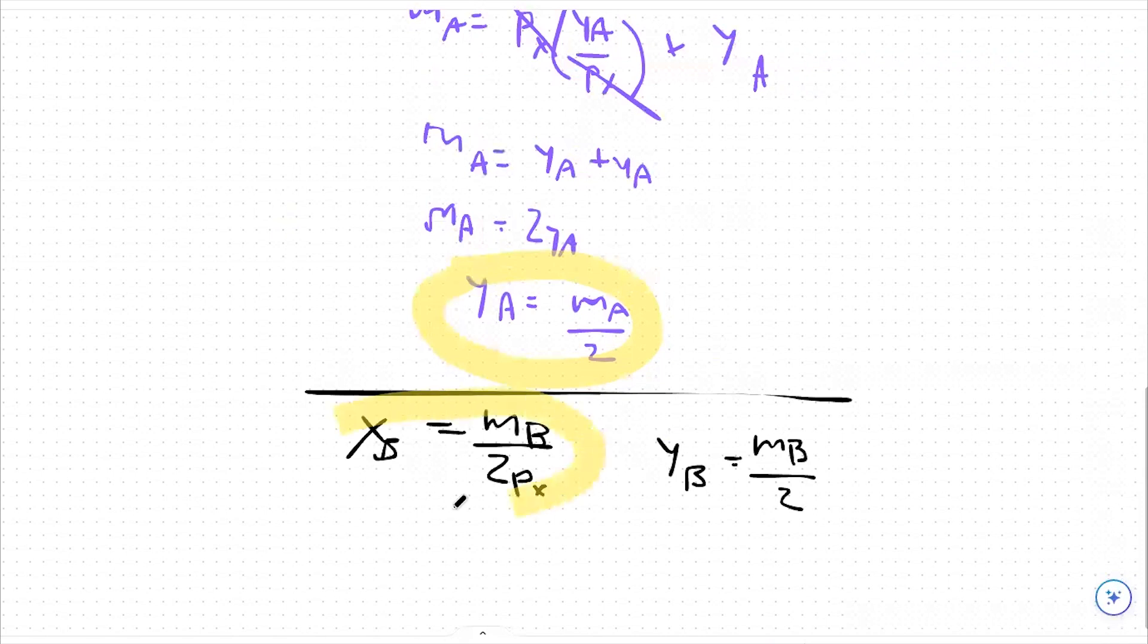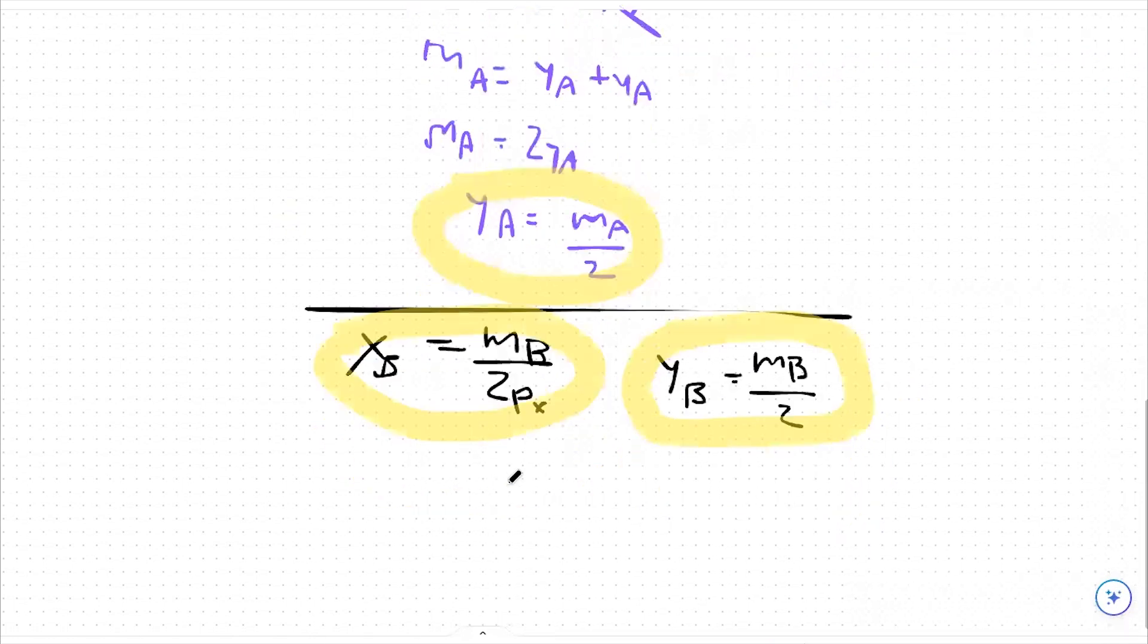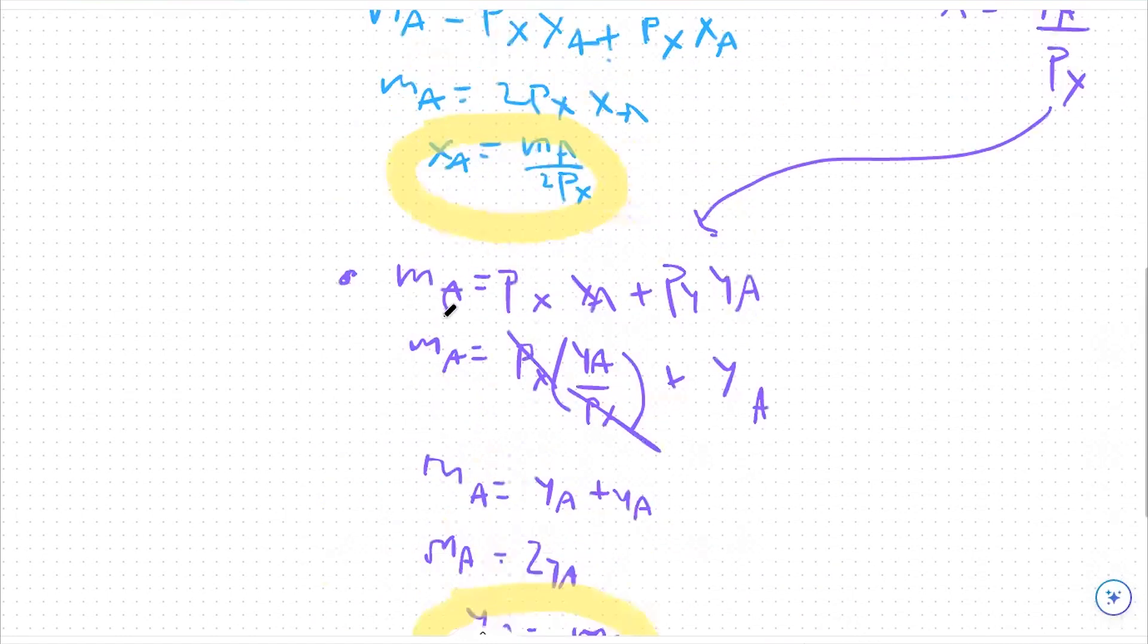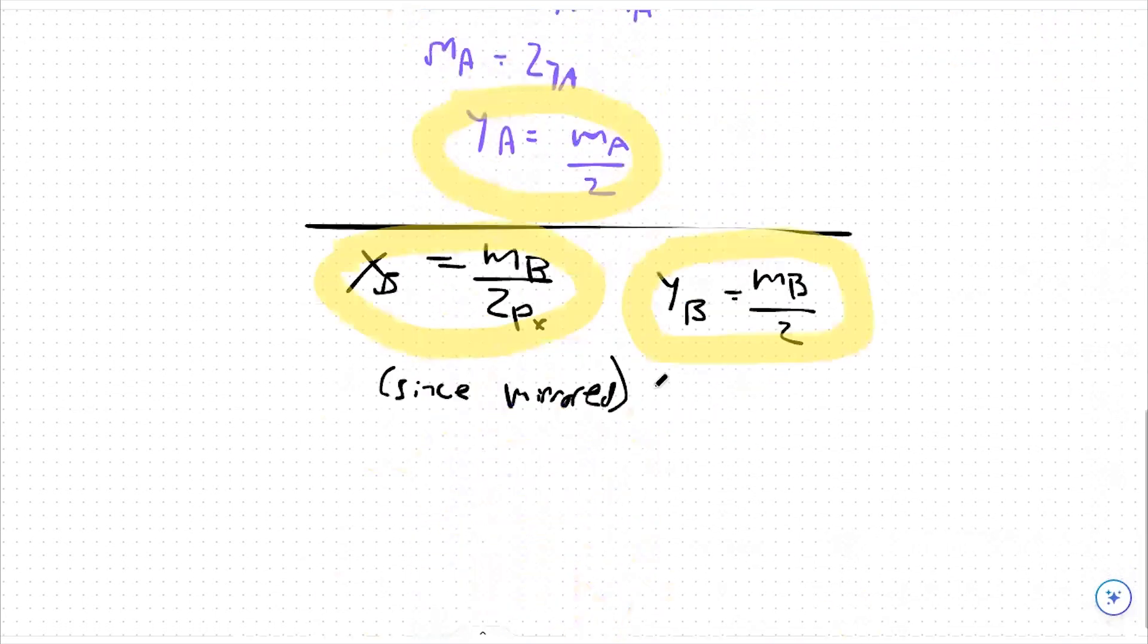So these are also assumptions that we can make. This is since it's mirrored. So in the case that it's not mirrored, all we would have to do is go back and do this exact same process and say MB is equal to 2px times xB plus 2py times yB, and then solve from there. We're just saving a bit of time since it's all mirrored anyways.